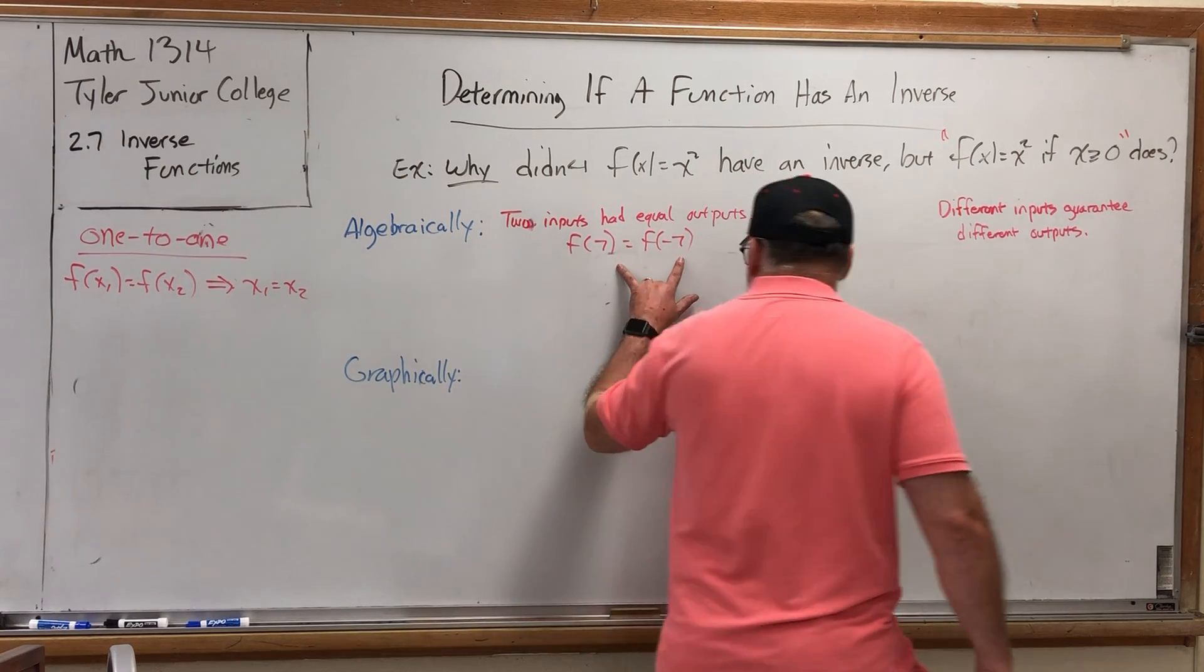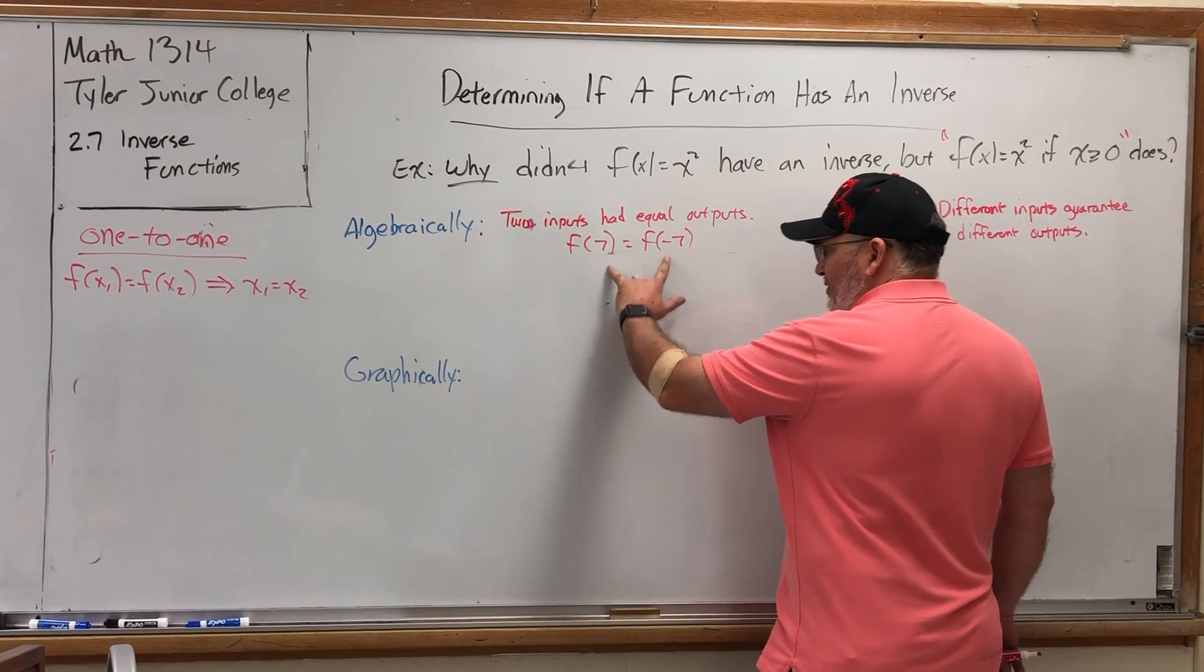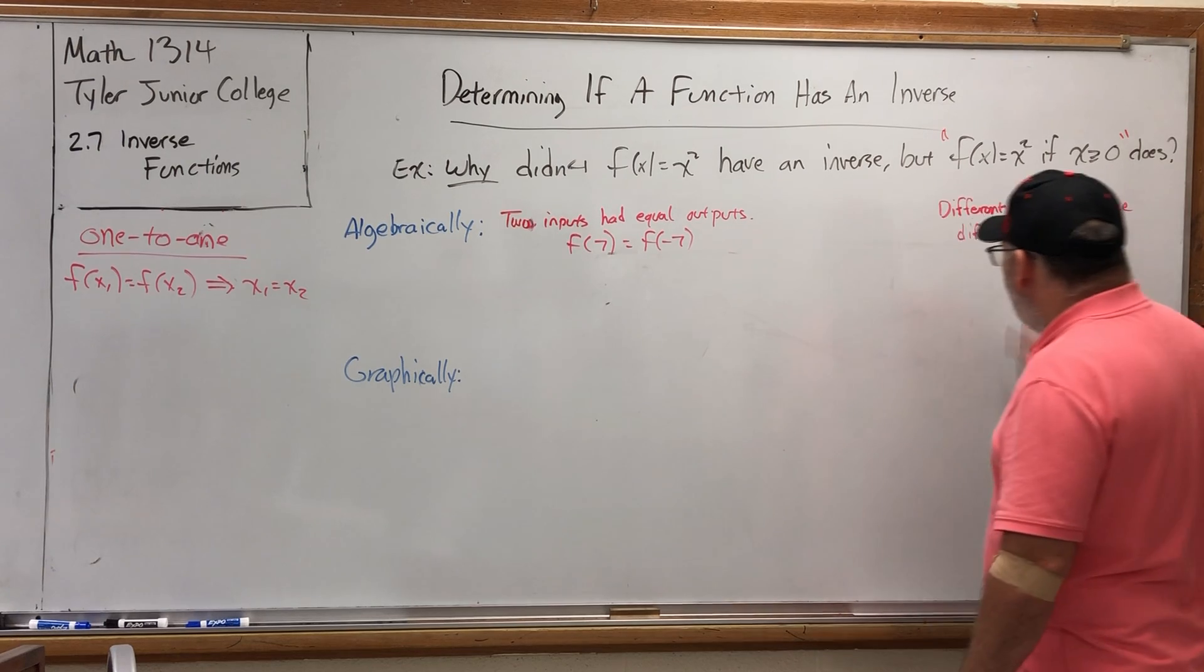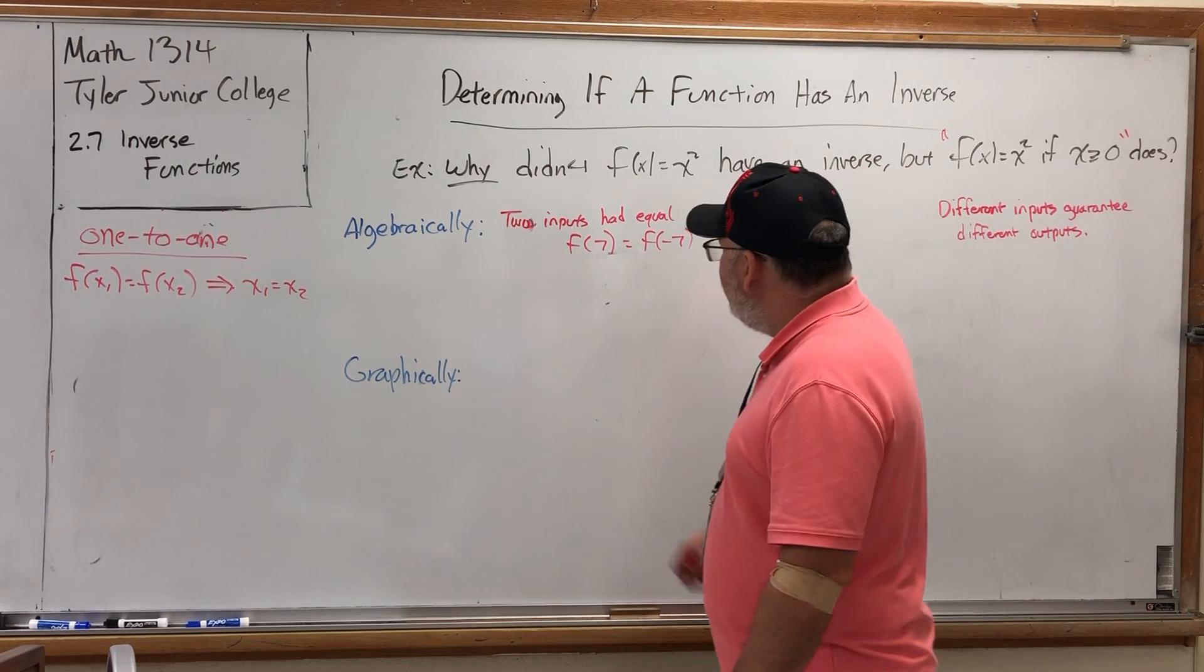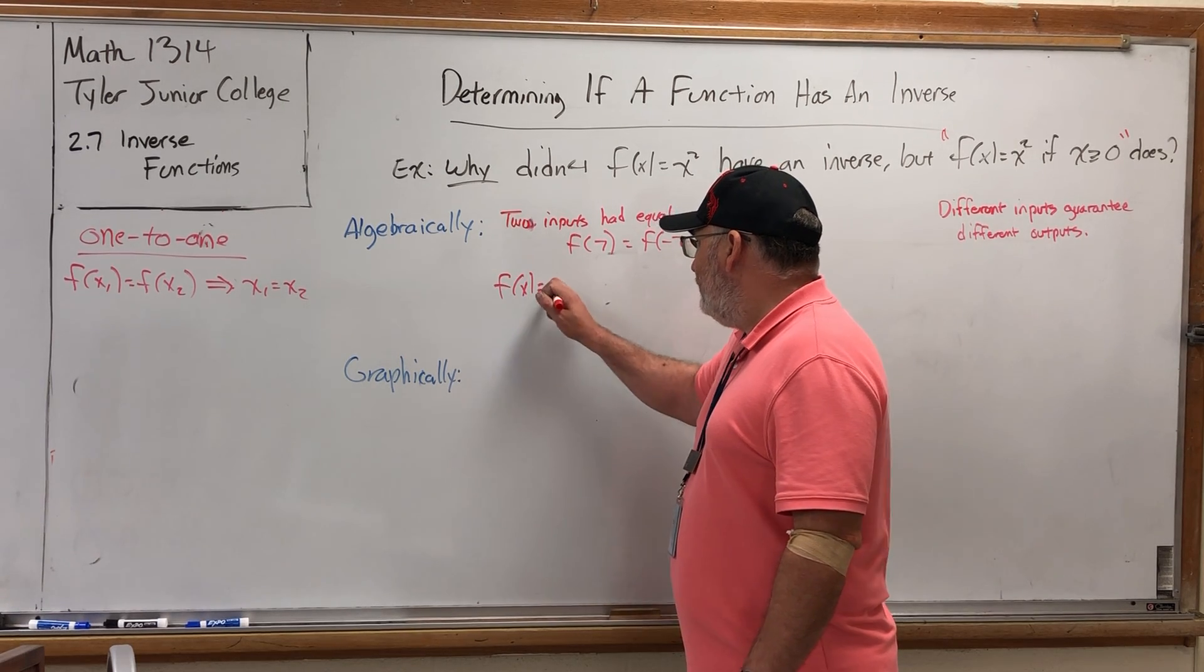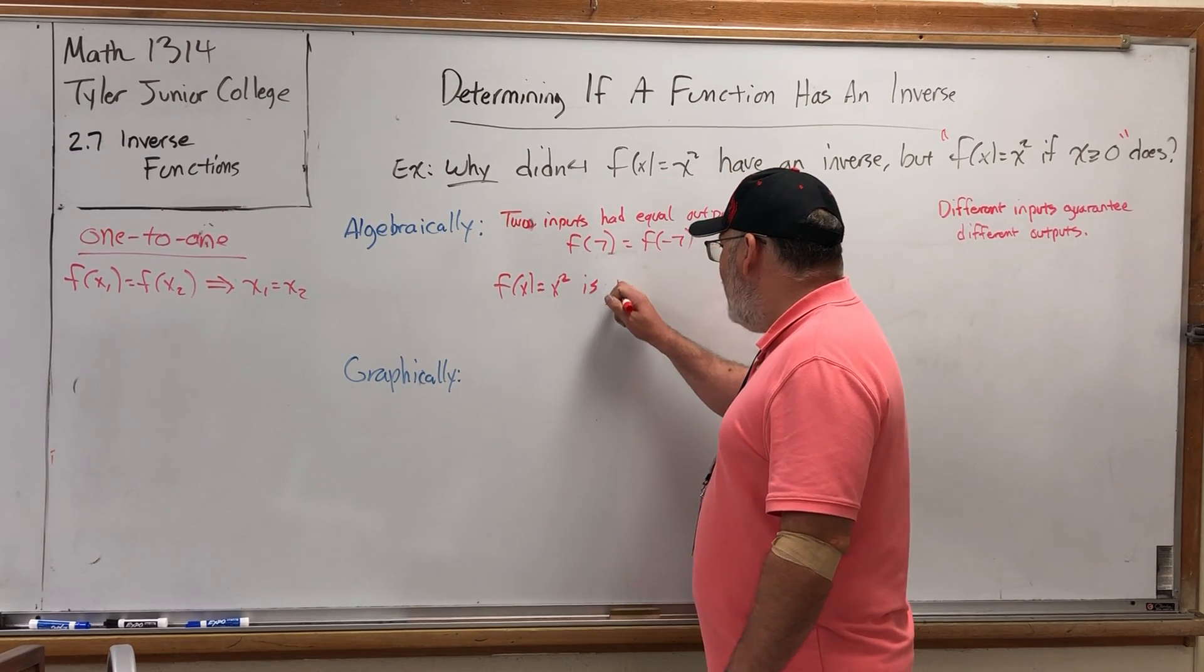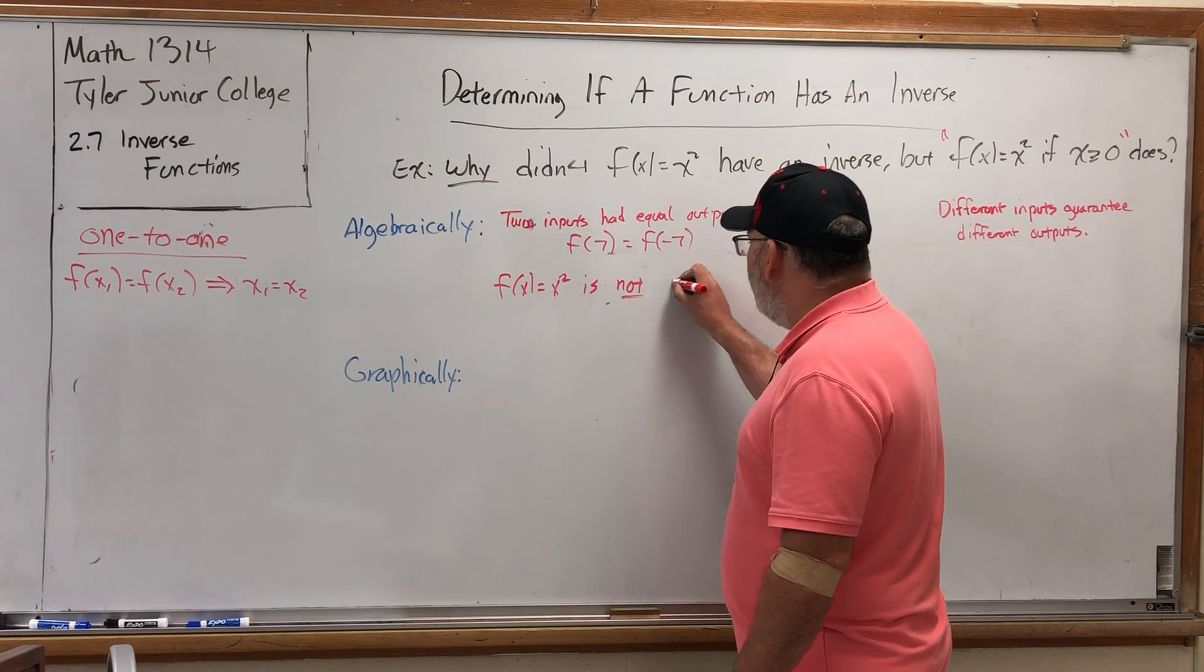In this case, I had two things coming out the same, but they were different to begin with. Not going to happen over here. So algebraically speaking, you would say that f of x equals x squared is not one-to-one.